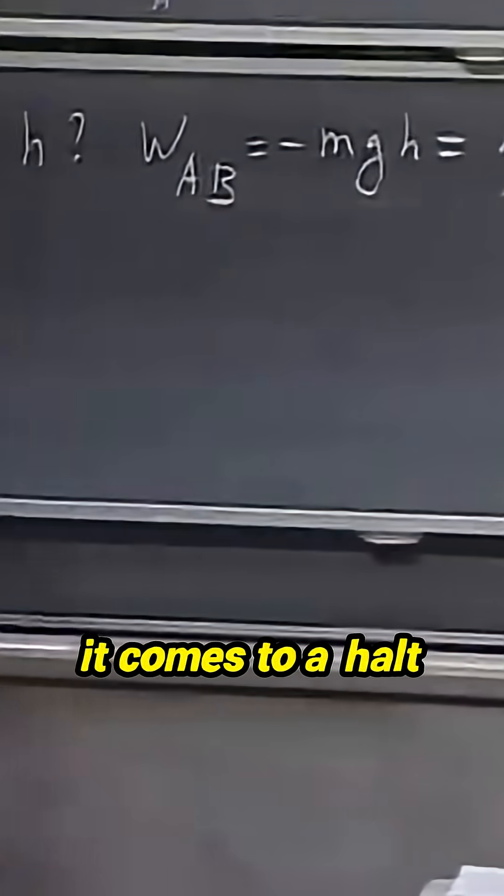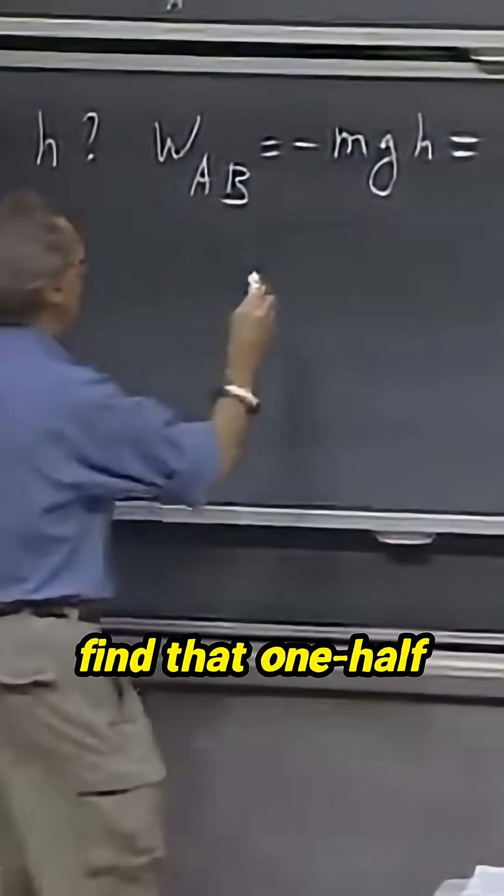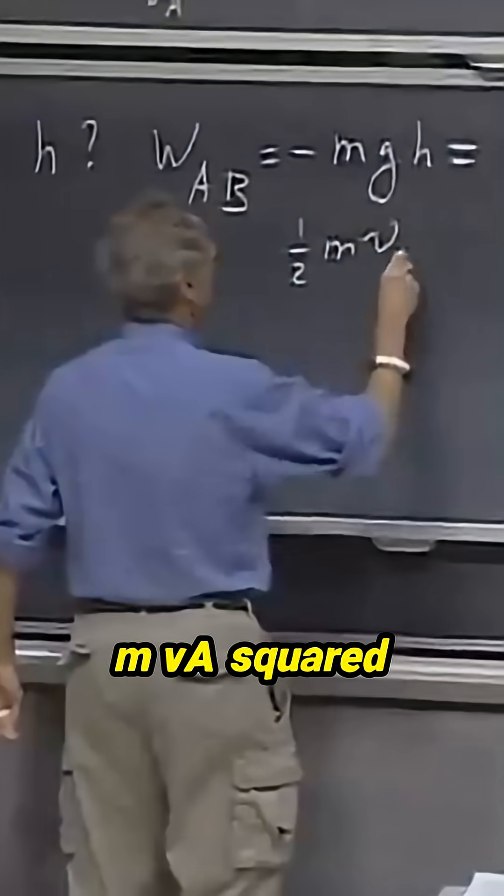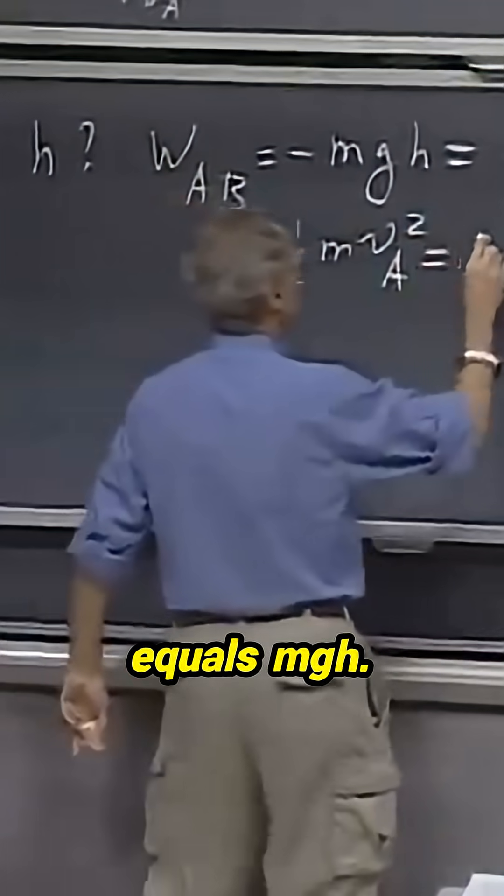This is zero because it comes to a halt here, and so you find that one-half m v A squared equals mgh.